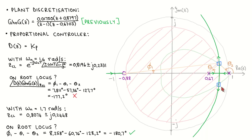To check if this point lies on the root locus we use the angle condition. On the edge of the circle the natural frequency is 1.6 radians per second and we calculate the complex pole pair to be 0.8196 plus or minus j 0.2331. The sum of the angles at this pole, phi 1 minus theta 1 minus theta 2 equals minus 177.2 degrees, which means that this pole location is not quite on the root locus. To arrive at minus 180 degrees we can increase the contribution of theta 1 and theta 2, which will happen if the pole is further to the left. We therefore try a natural frequency of 1.7 radians per second, which results in poles at 0.8074 plus or minus j 0.2448. For these poles the angles sum to minus 180.7 degrees, which is close enough to minus 180 degrees.